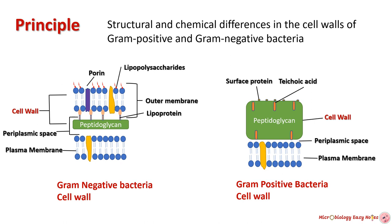What is the principle behind gram staining? Why do some bacterial cells stain pink or red and some violet? It is due to the structural and chemical differences in their cell walls. Gram-positive bacteria have a thick peptidoglycan layer, and gram-negative bacteria have a thin one. This difference makes the basis of gram staining. For a detailed description of the different cell walls of bacteria, check the link given in the description box below.